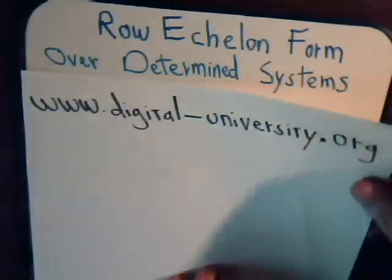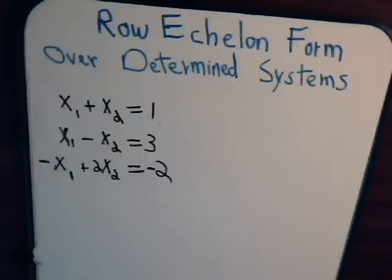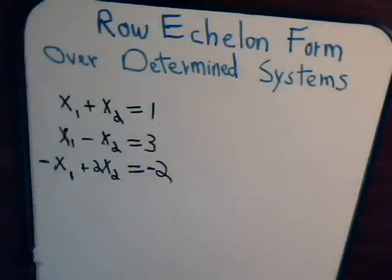Suppose for example we had this set of equations, three equations but only two unknowns, and we want to know can we find a value for x1 and x2 that will satisfy all three equations.